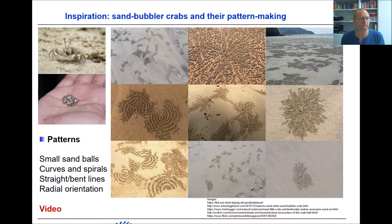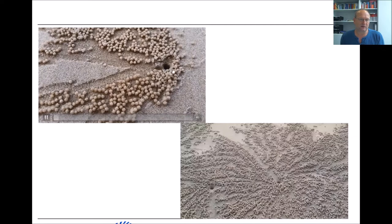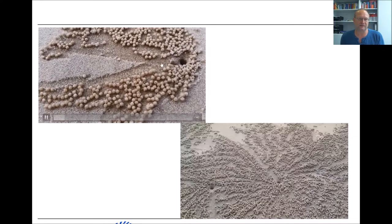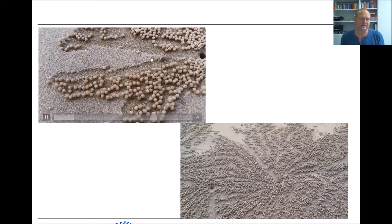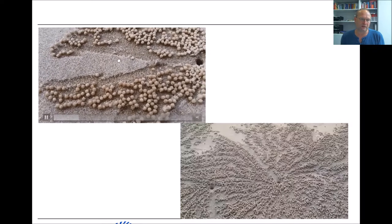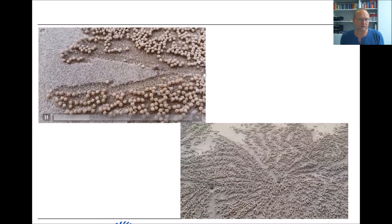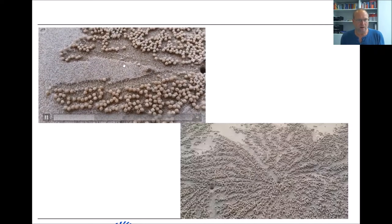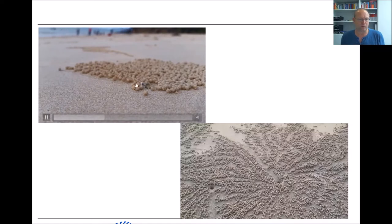They are created by a small animal called a sand bubbler crab — seen here on a hand, very tiny. As part of their lifestyle they create these patterns in the sand, consisting of small sand balls, curves, spirals, straight and bent lines, with a radial orientation. These small animals live on a beach which is regularly flooded. They live in a burrow, and when the flood recedes they come out and feed on the sand, collecting edible particles.